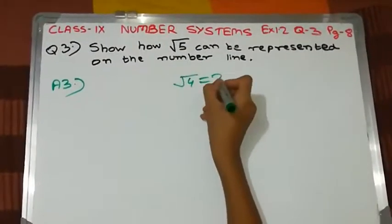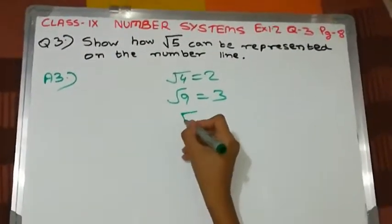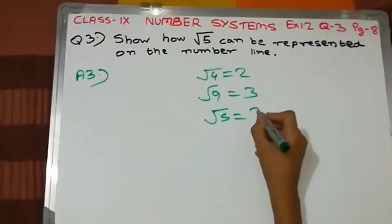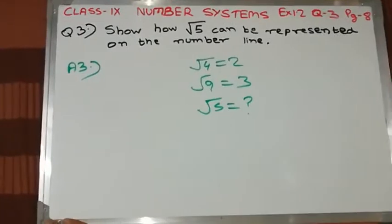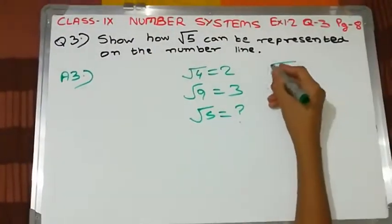As you know, √4 = 2 and √9 = 3. What is √5? We don't know the exact value of √5, so we will split √5 like this.